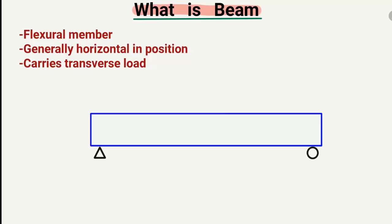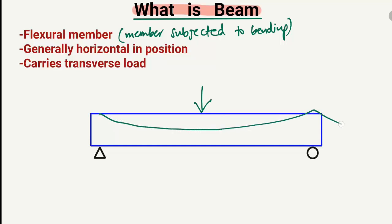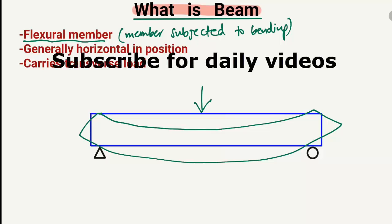A beam is basically a flexural member — it is a member that is subjected to bending. If a load is acting on a beam, the beam will try to bend. Because of this bending behavior, this member is known as a flexural member or bending member. The key characteristic of a beam is that it will always try to bend upon loading.